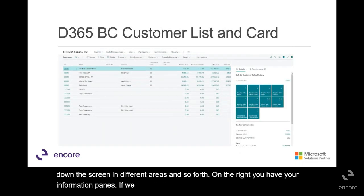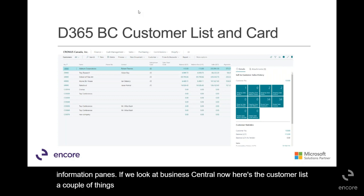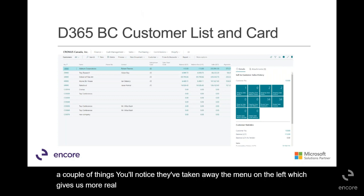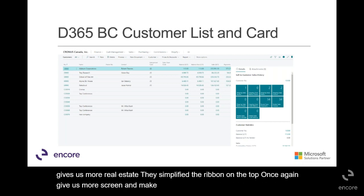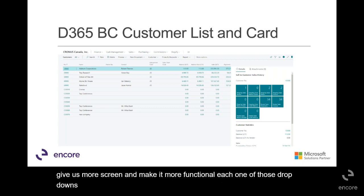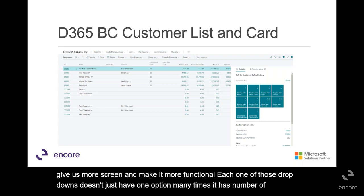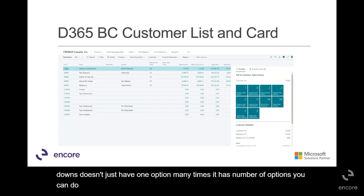If we look at Business Central, here's the customer list. They've taken away the menu on the left, which gives us more real estate, and they simplified the ribbon on the top, giving us more screen and making it more functional. Each one of those dropdowns has a number of options — more than you could have put on the ribbon.